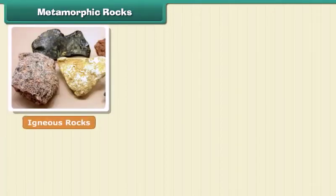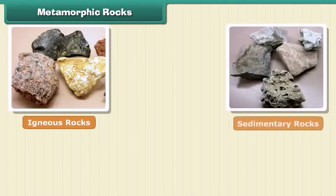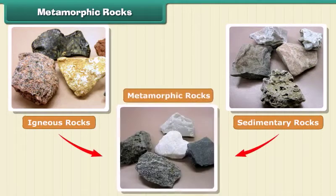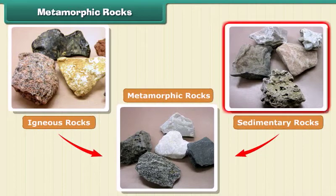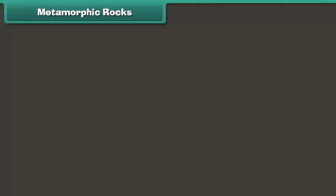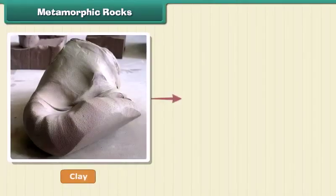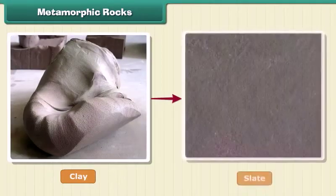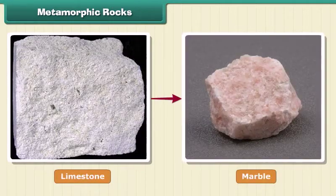The third type of rock is made out of the first two types. These are metamorphic, or changed, rocks. Igneous and sedimentary rocks can change into metamorphic rocks under great heat and pressure. For example, clay changes into slate and limestone into marble.